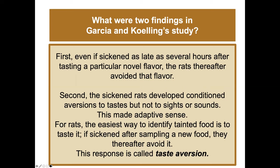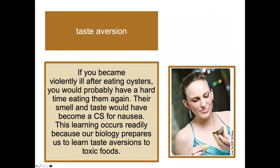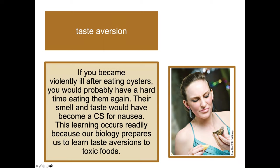This makes adaptive sense from an evolutionary perspective: for rats, the easiest way to identify tainted food is to taste it. This response is called taste aversion, and you've likely experienced it. For example, if you've had oysters and got sick, their taste and smell may become a conditioned stimulus for nausea. Personally, after getting sick following a salad with ranch dressing at age 17, I couldn't eat or even smell ranch dressing for nearly 20 years.